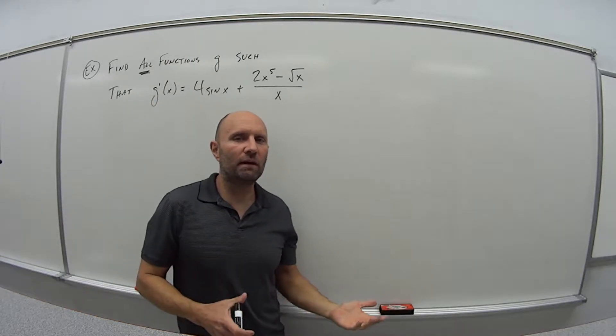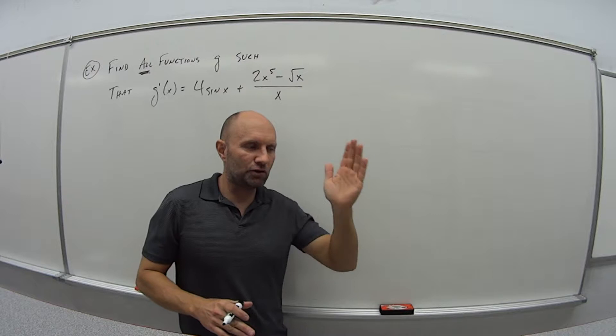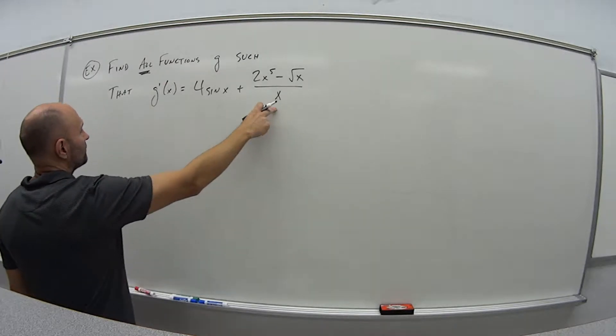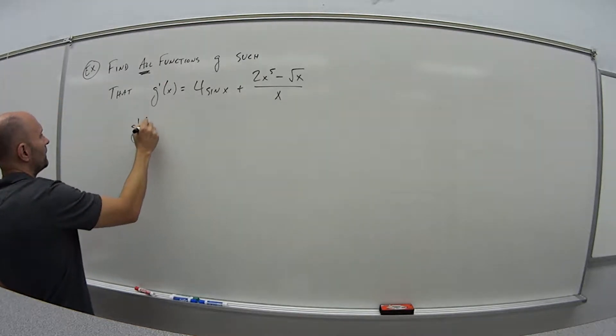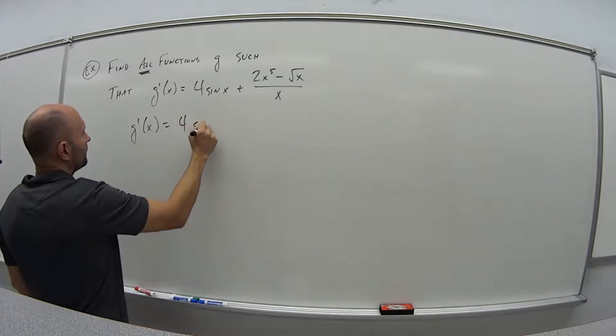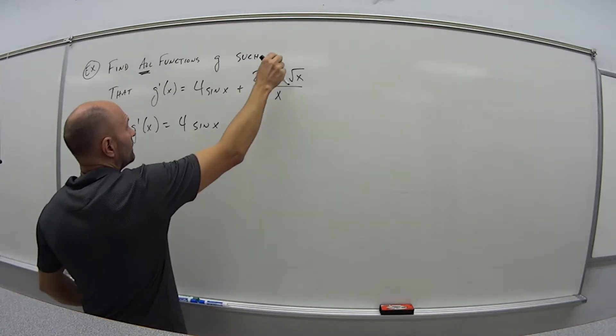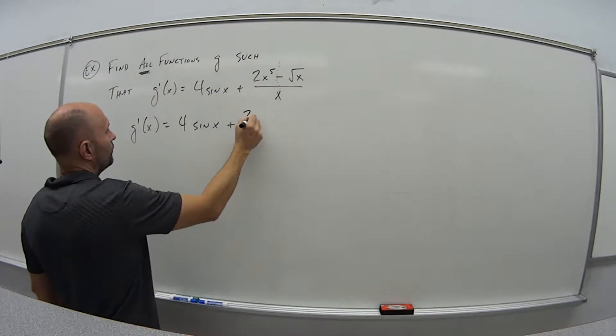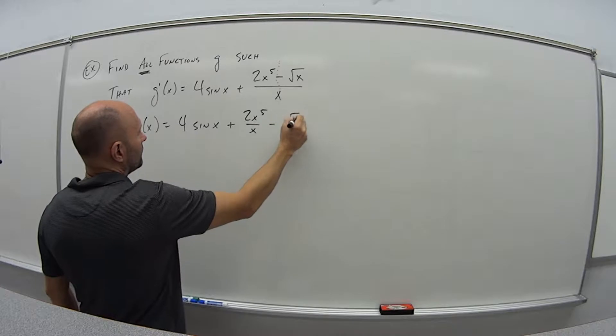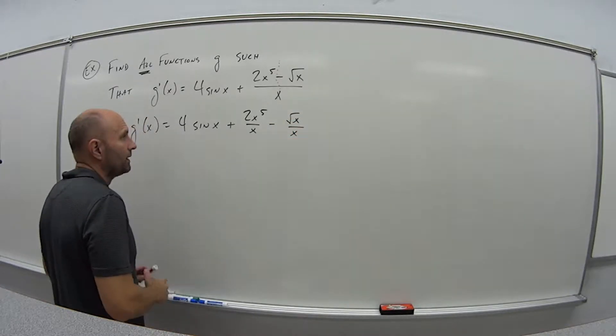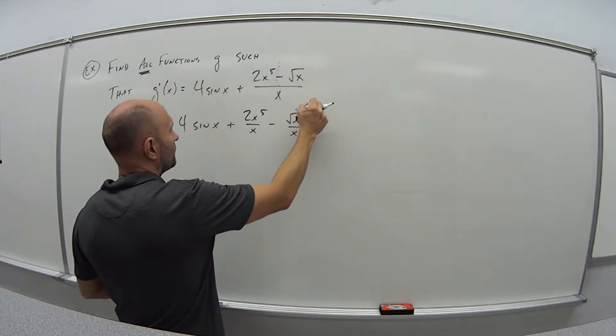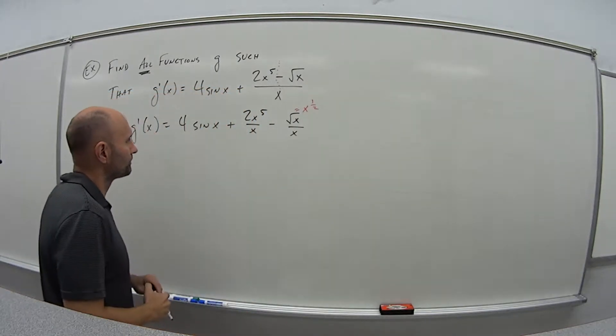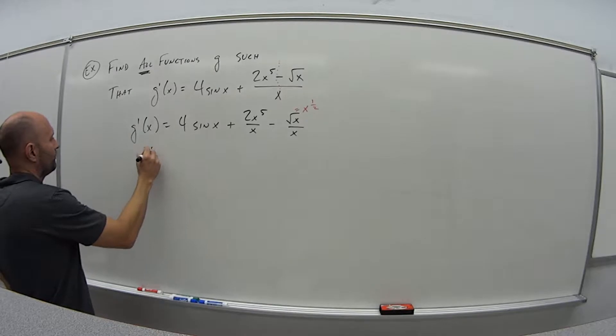So first and foremost, if you remember the table that we built at the end of last video, I just want all the pieces separate, and then I can take the antiderivative of each piece. So the first thing I want to do is separate this quotient right here, this fraction. So we get 4 sine of x, and so then I'm going to essentially change this fraction into two fractions. So plus 2x to the fifth over x minus square root of x over x. And this square root of x is x to the 1 half. Because we're going to be working with the exponents, so we'll get rid of radicals if we can.